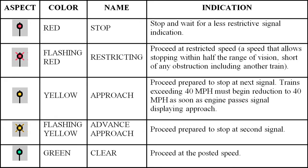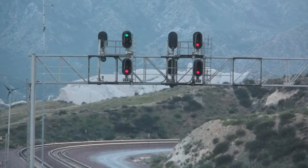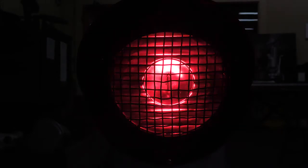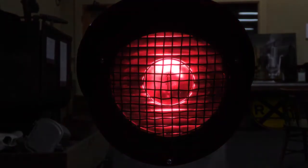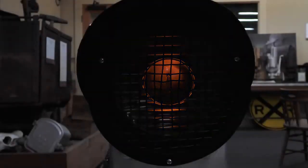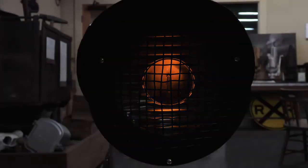Many more aspects and indications exist, and the number that a signal can give increases if the signal has more than one head. This pot signal on display has a single head and can therefore only display one color at a time. It is set up to demonstrate five different signal indications: stop, restricting, approach, advance approach, and clear.